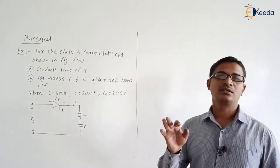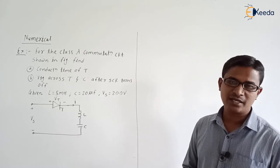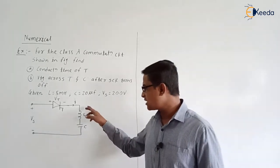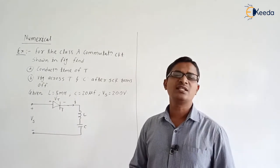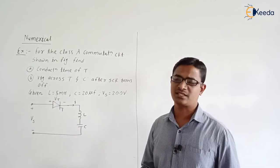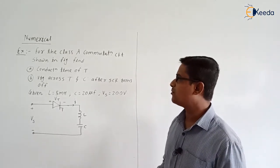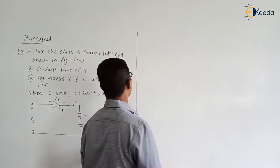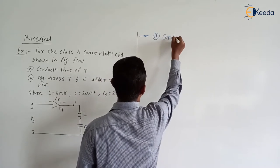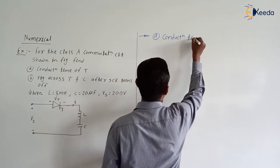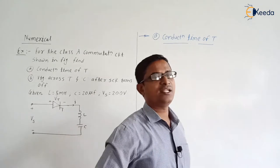In the last video we discussed class A commutation. Here, conduction time of thyristor is asked. If you check the circuit, the load resistor is not mentioned, and in circuit analysis we generally neglect the load resistor. So we will have only L and capacitor. The conduction time of thyristor — we have derived the expression — it is Tc = π / ω₀.